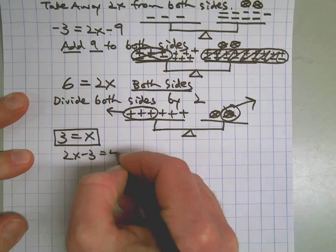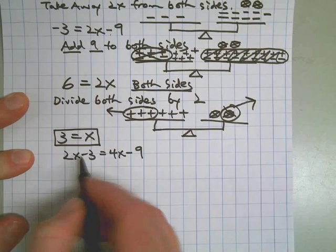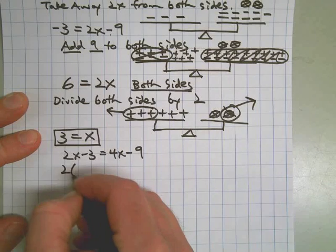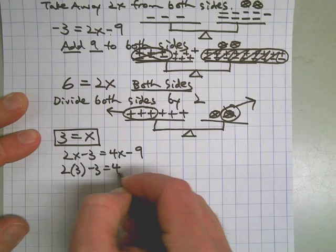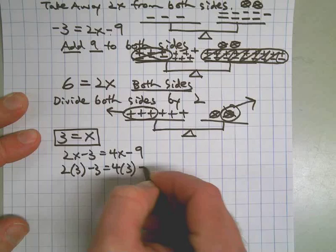And now I'll use substitution. Wherever I see an x, I'll use a 3. 2 times 3 minus 3 equals 4 times 3 minus 9.